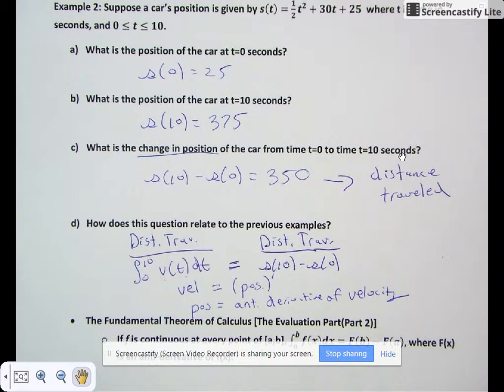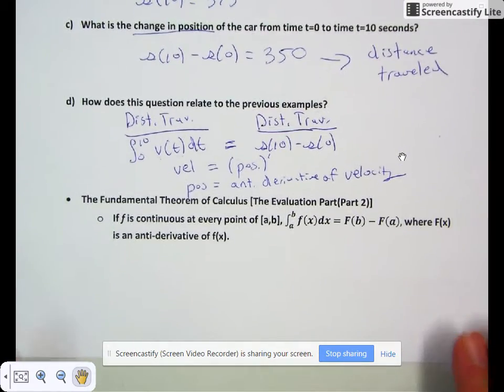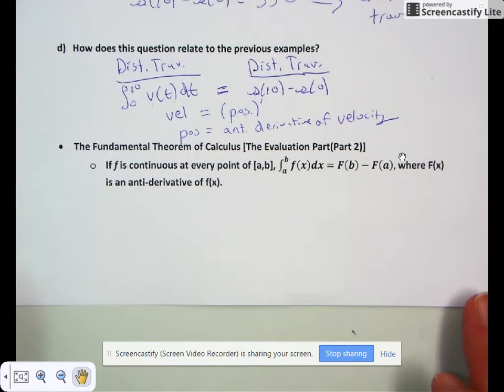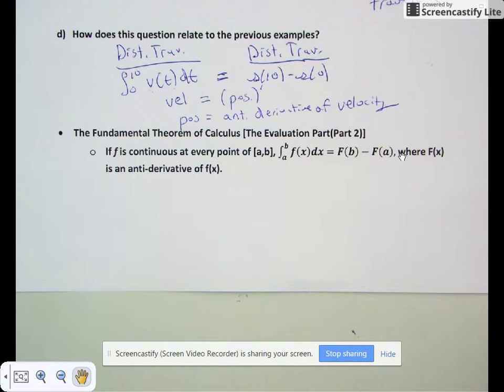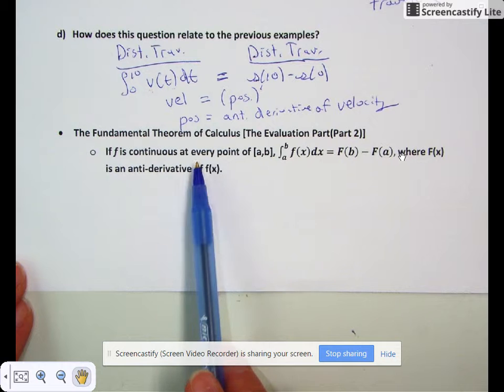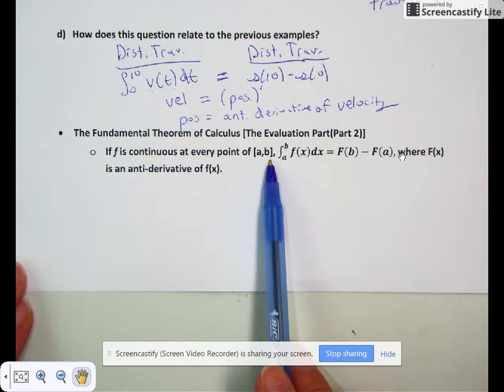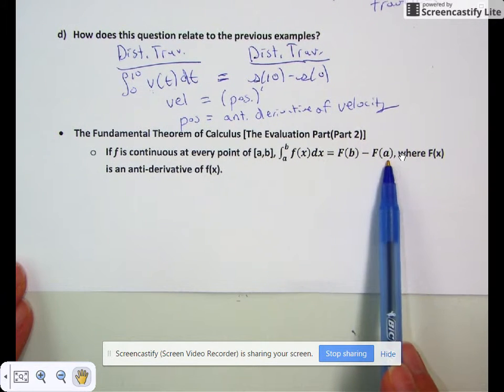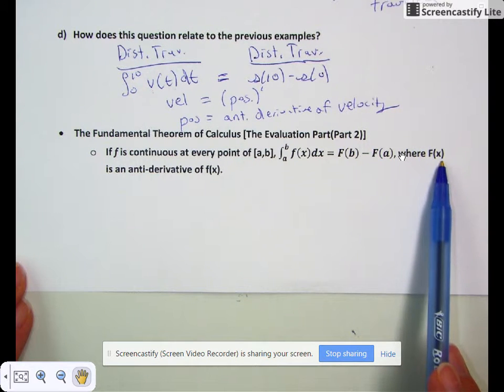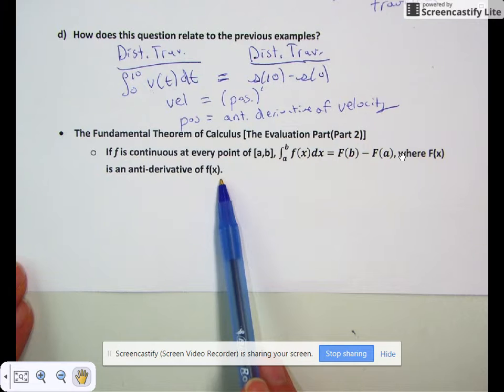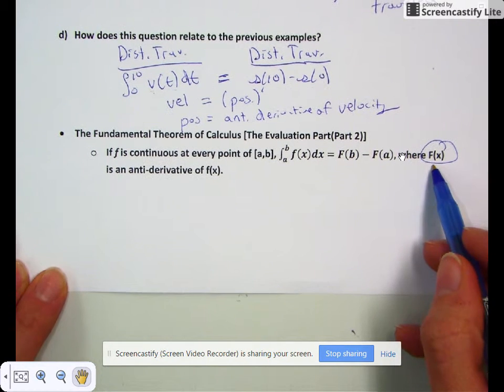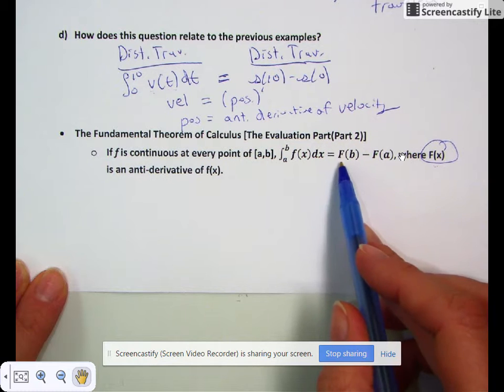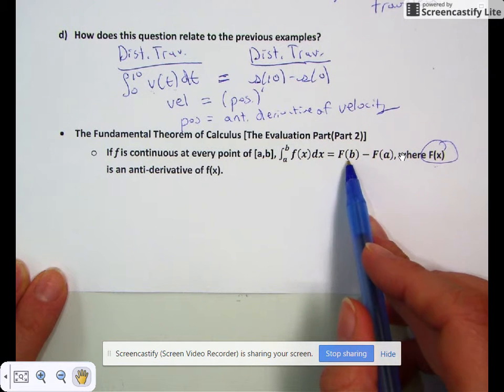Now what we're really trying to get to in this section is the Fundamental Theorem of Calculus. We're going to look at Part 2 first because it's a little easier. If f is continuous at every point of [a,b], then the integral from a to b of f(x) dx equals F(b) - F(a), where capital F(x) is an anti-derivative of f(x). The important part to remember is that this capital letter means something—it's the anti-derivative of our original function f.